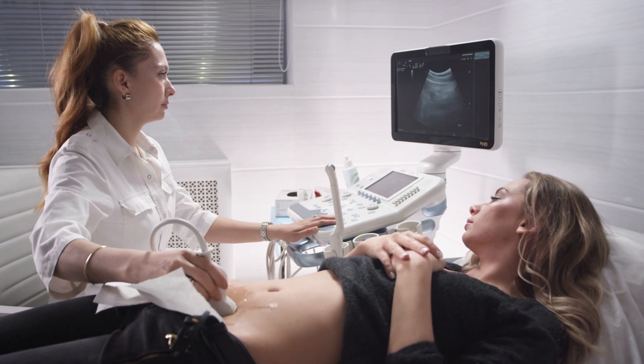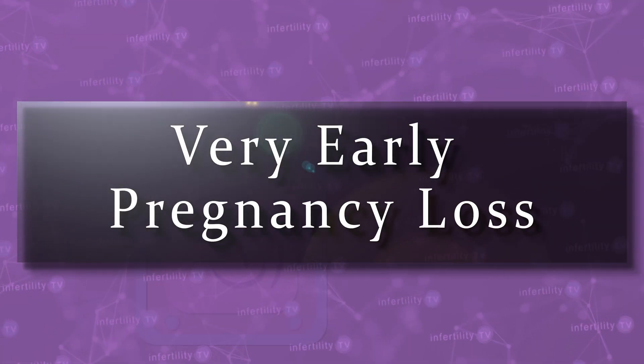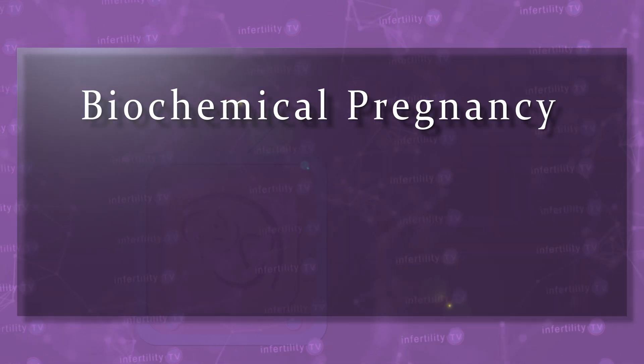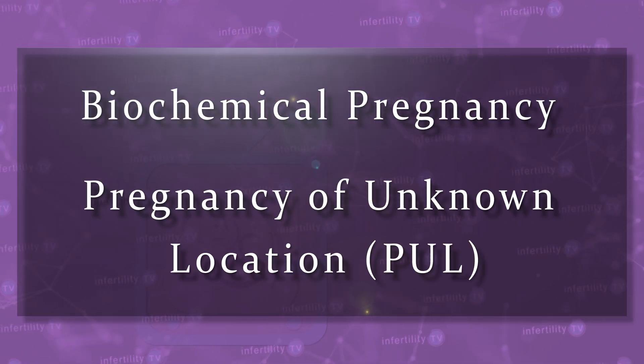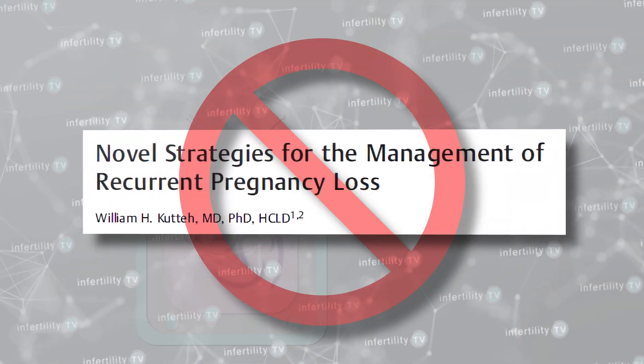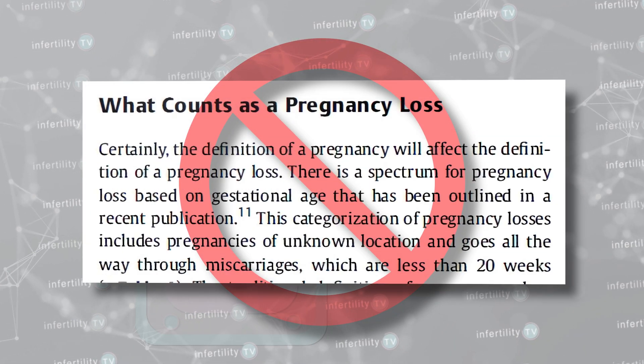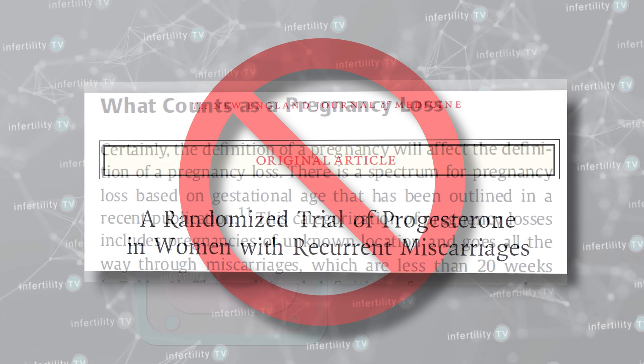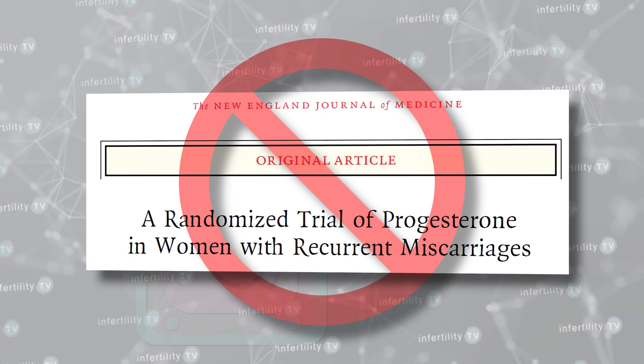There are two categories of intrauterine pregnancy losses. Some pregnancies miscarry after a positive pregnancy test but before the pregnancy can be seen on ultrasound. These very early pregnancy losses are known as biochemical pregnancies or pregnancies of unknown location. Because they are lost so early, there has been very little study of these types of losses. When you look at studies of recurrent miscarriages, researchers usually exclude couples with biochemical losses. The causes may be similar to later miscarriages, or they may not — we just don't know.